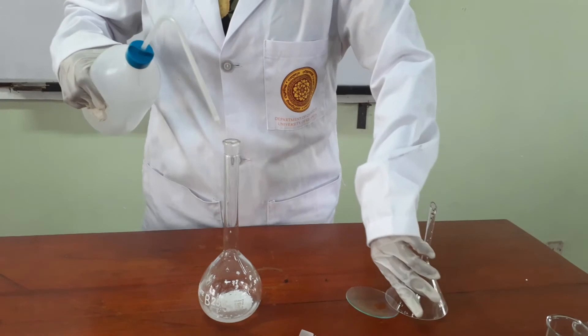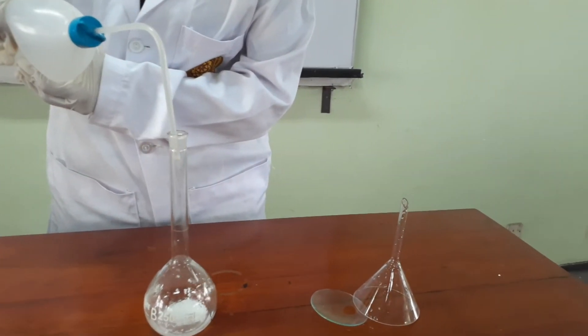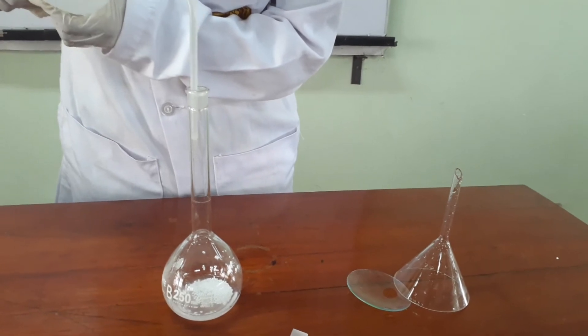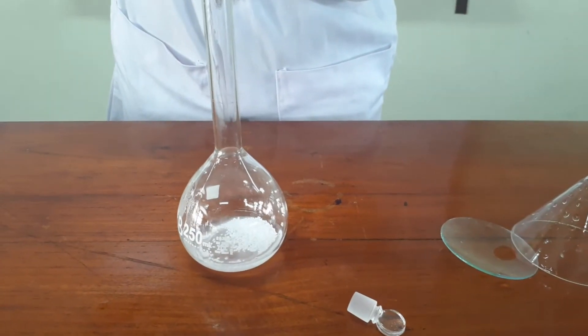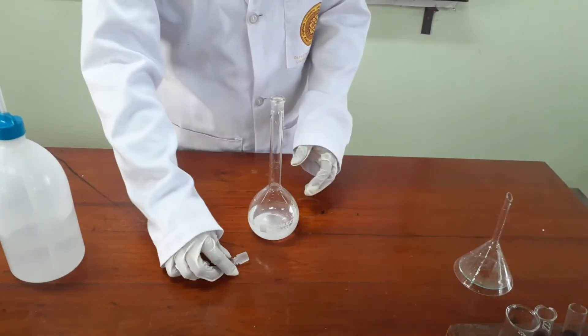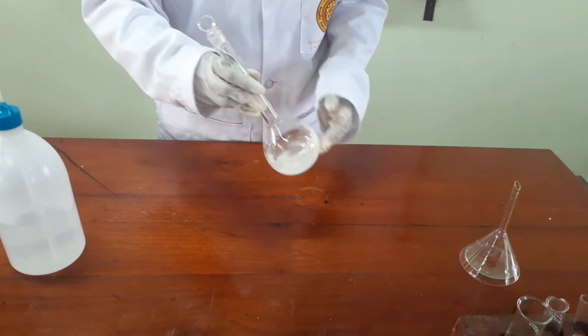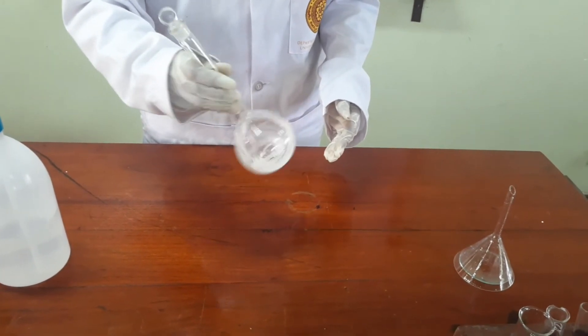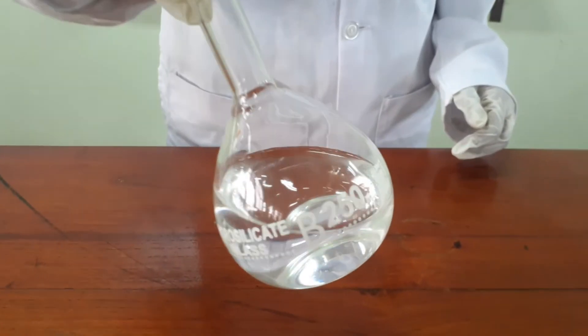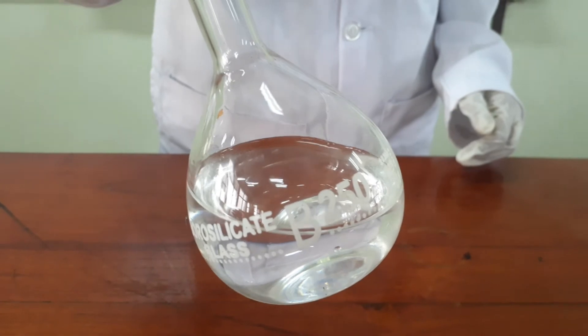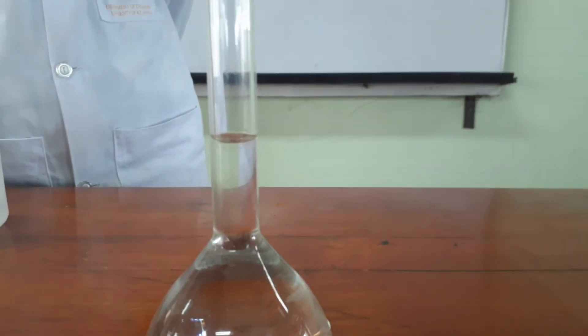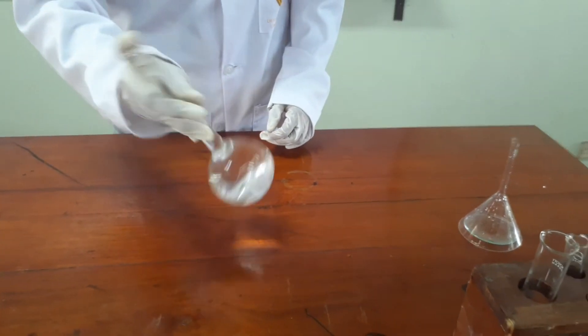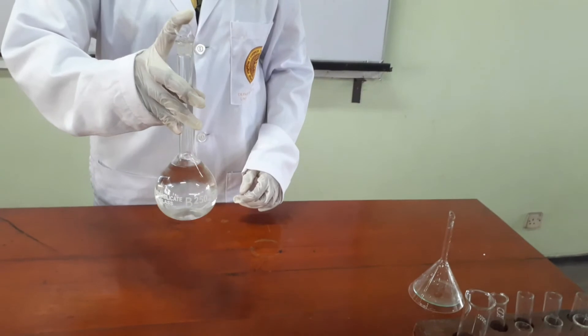After washing the funnel, remove it from the volumetric flask. Then add some amount of distilled water to the volumetric flask. Then add distilled water carefully up to the mark. Then stopper the flask and invert upside down in order to mix the whole solution evenly.